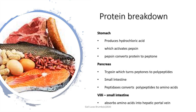To recap protein breakdown: the first place protein is broken down is in the stomach. Hydrochloric acid activates pepsin and pepsin converts proteins to peptones. Then in the duodenum, the pancreas produces trypsin which breaks those peptones down to polypeptides. Then in the small intestine, peptidase — an intestinal juice — converts polypeptides to amino acids. The villi then absorb those amino acids into the hepatic portal vein of the blood circulation.